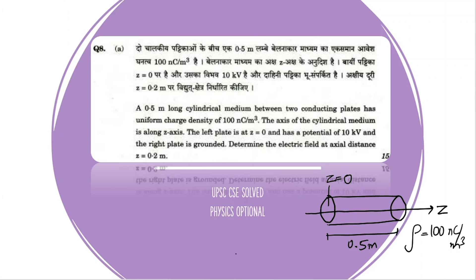The left plate is at Z equal to 0 and has a potential of 10 kilovolts. Similarly, the right plate is grounded at 0 volts, and is located at Z equal to 0.5.